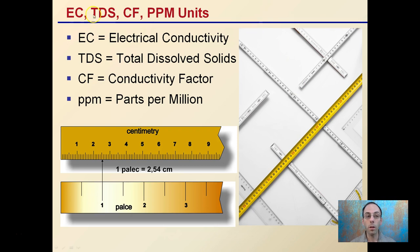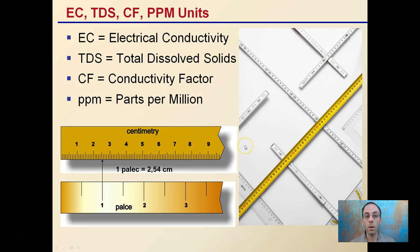We're going to go over some common ones here: EC, TDS, CF, and PPM — referring to electrical conductivity, total dissolved solids, conductivity factor, and parts per million. Some of these are interchangeable terms, like inches to centimeters, so be mindful of what you're using and what it measures.